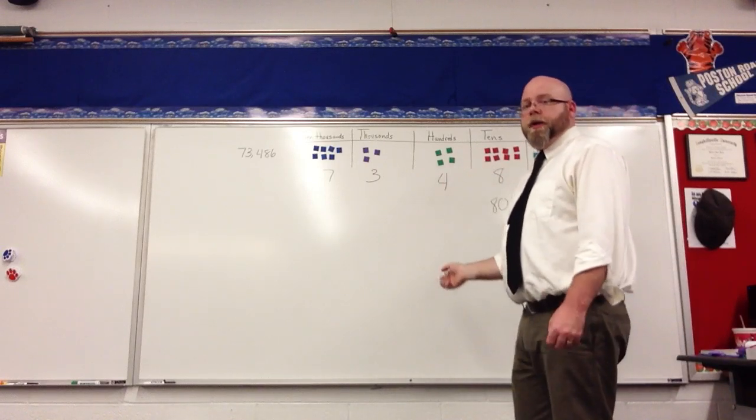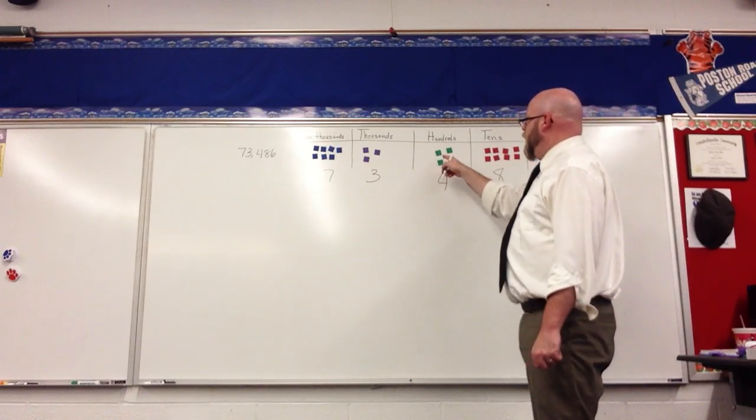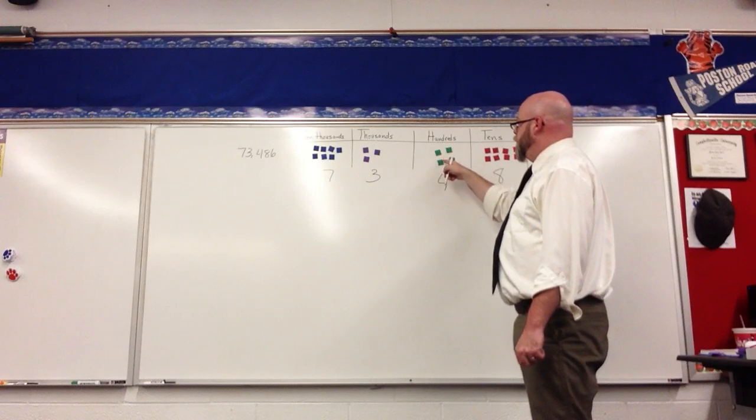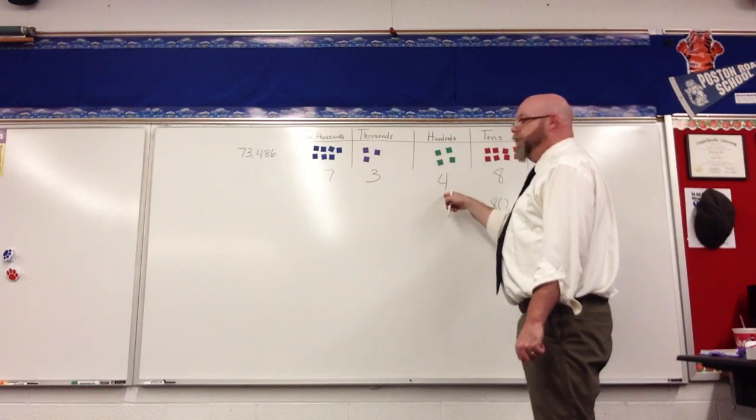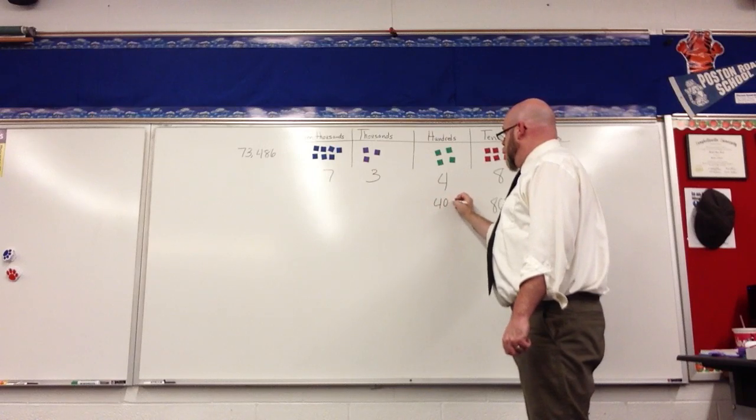Here I have 4 hundreds. I would count by 100 four times: 100, 200, 300, 400. This would be 400.